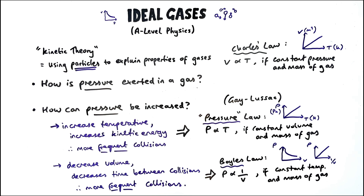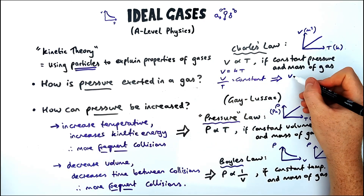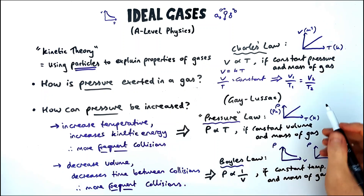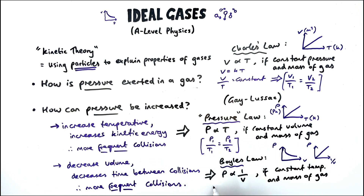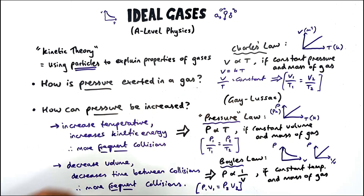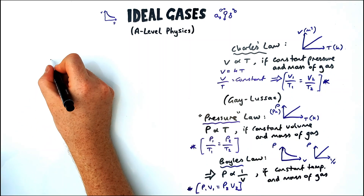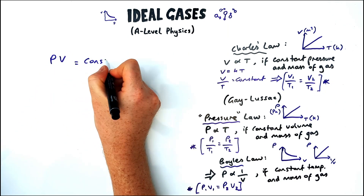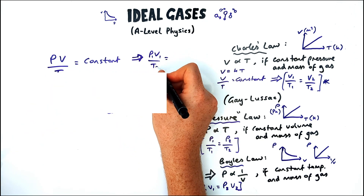How can we use these relationships in calculations? Volume equals a constant times T, so V/T equals a constant, meaning V₁/T₁ = V₂/T₂. Similarly for pressure and temperature: P₁/T₁ = P₂/T₂. And for pressure and volume, multiplying them together gives a constant: P₁V₁ = P₂V₂. Combining all three relationships gives PV/T equals a constant, so P₁V₁/T₁ = P₂V₂/T₂. This constant does have a value, which we'll use in the ideal gas equation.